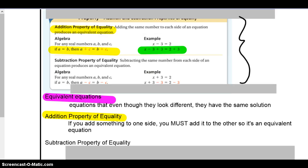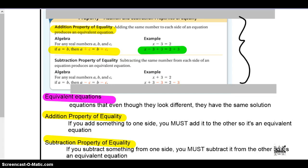So then, if we've got that, well, what about the subtraction property of equality? Yes, you have to write that one down. Now, if addition means if you add something to one side, you must add it to the other, then subtraction property says if you subtract something from one side, you must subtract it from the other, so it's an equivalent equation. So make sure these vocabulary words right here, you get those written down. Okay, I'm going on. If you need to pause, pause. Not a big deal.